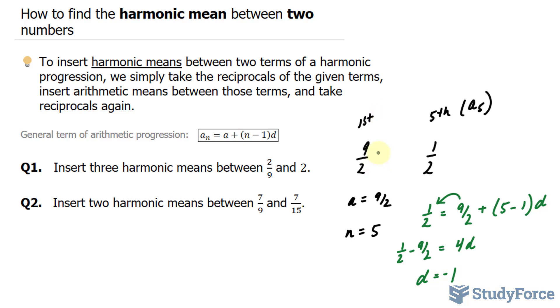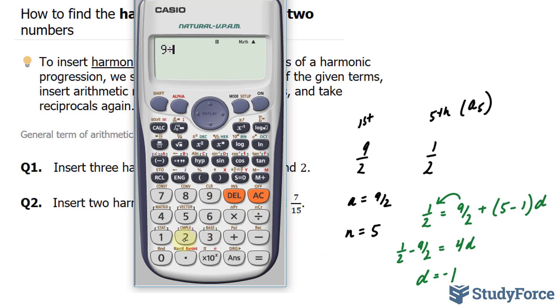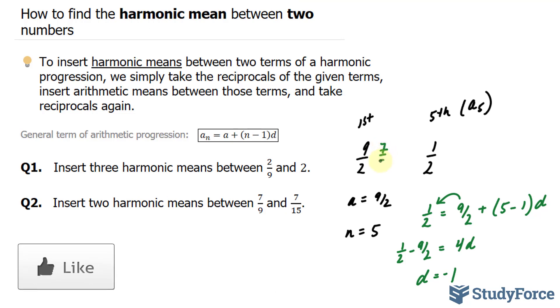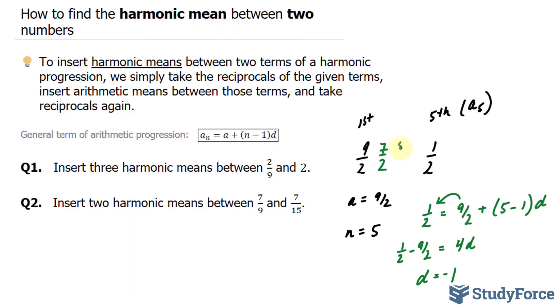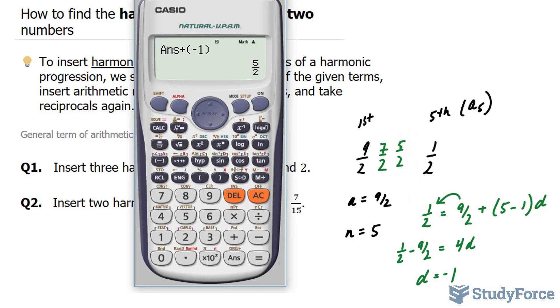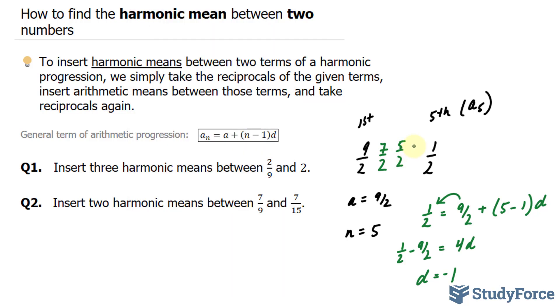Now, to find the second term in this series, I'll take 9 over 2 and add negative 1. This gives me 7 over 2. Let's do it again. Plus negative 1, which gives me 5 over 2. And lastly, plus negative 1 gives me 3 over 2.